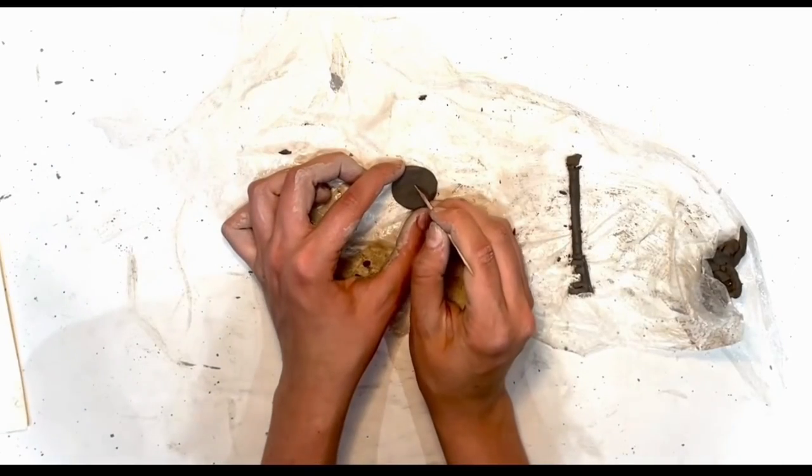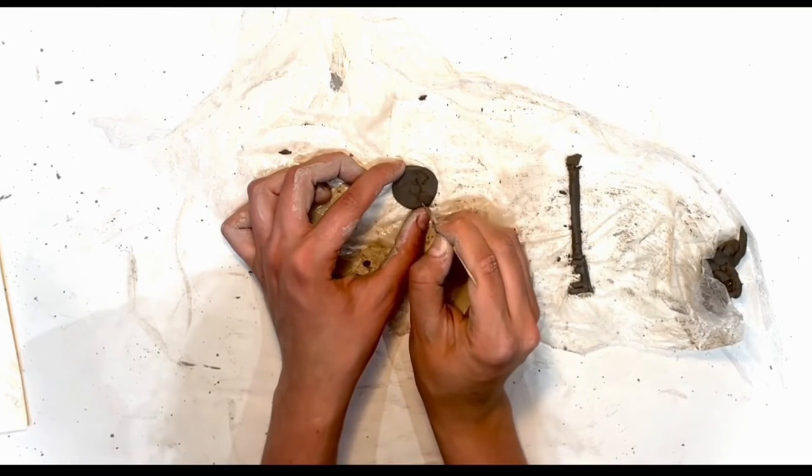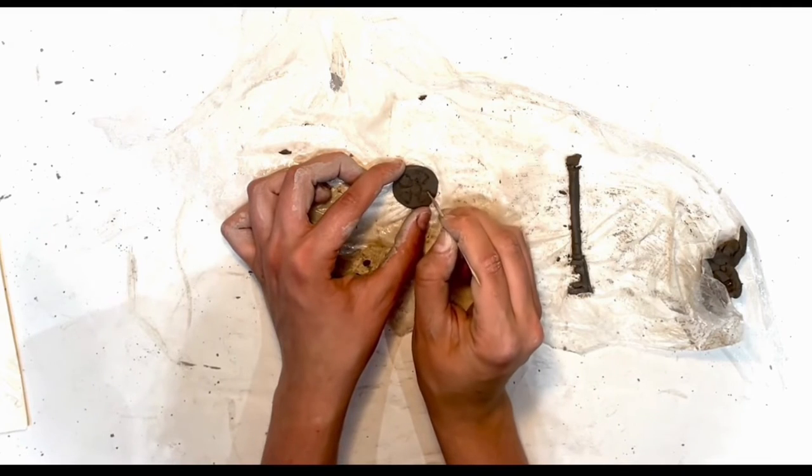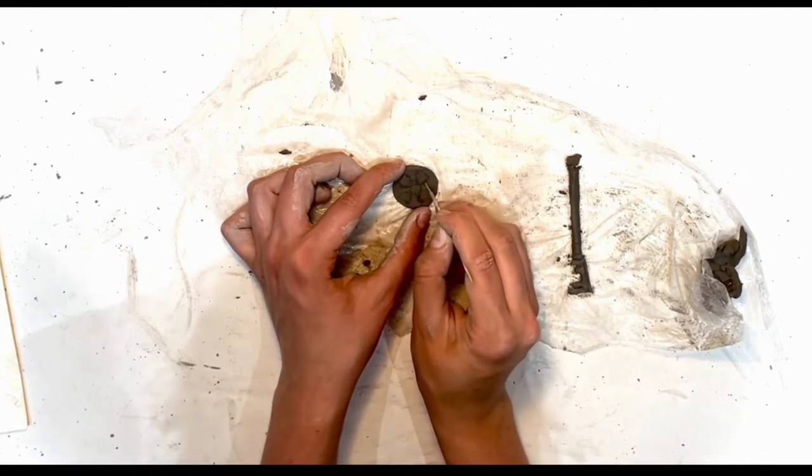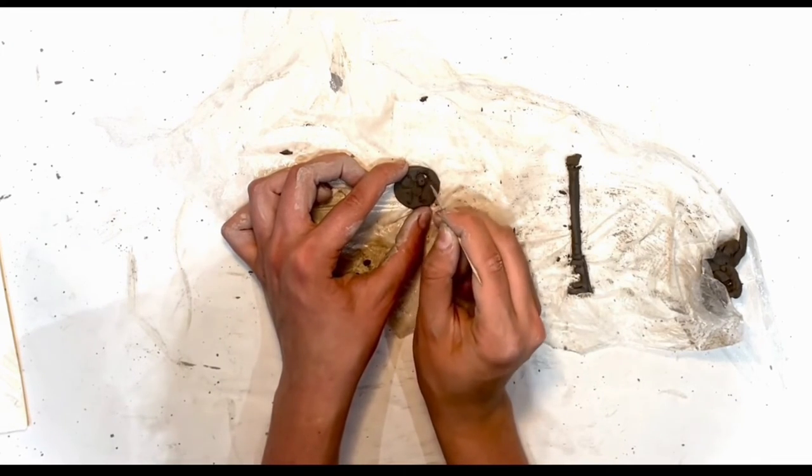I then marked out four semicircles and cut them out with a cocktail stick for the detailing on my key. I chose this to complement the shape of the sun on my book cover.